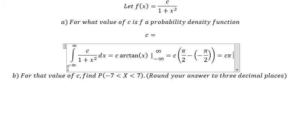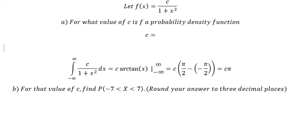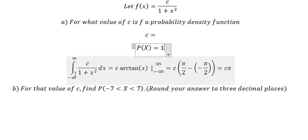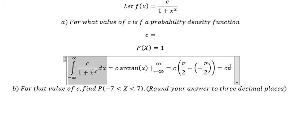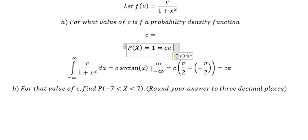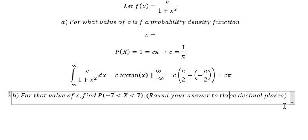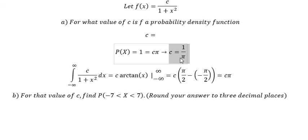We know that for a probability density function, the total integral must equal one. So this should be equal to one: cπ equals one. So c in this situation is equal to one over π. And now this is the final answer.